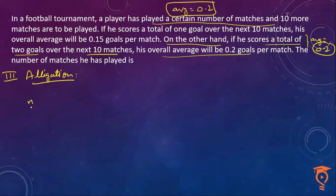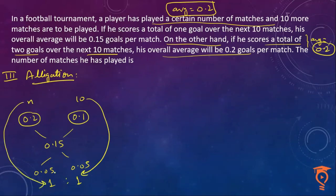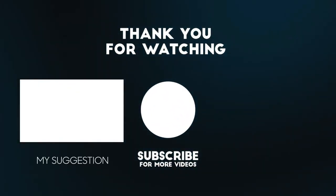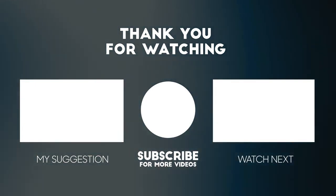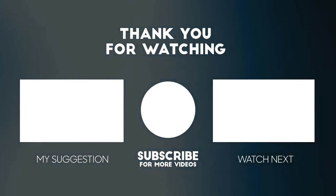So from here I get: in the initial n matches the average is 0.2, in the additional 10 matches the average is 0.1, and the combined average was becoming 0.15. From here you get a ratio of 1:1, and since that 1 stands for 10 matches, n also equals 10. This is how you get the answer using allegation. That's it, guys — thanks for watching. Keep watching this space for the next video to witness more amazing solutions to arithmetic questions in CAT 2021. Mayank signing off, thank you so much.